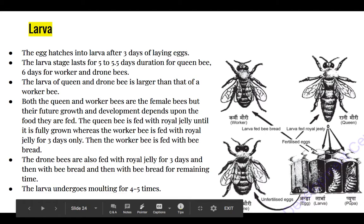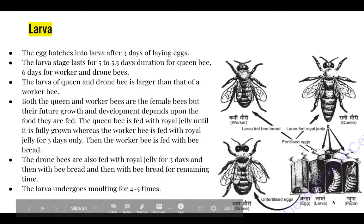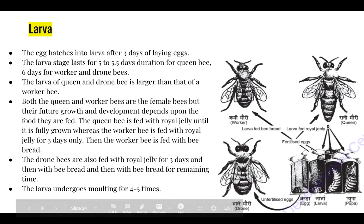Both queen and worker bees are female, but the future growth and development depends upon the food they are fed. If a larva is going to become a queen bee, the worker bee feeds it royal jelly until it is fully grown through its entire larva stage, and it turns into a queen bee.